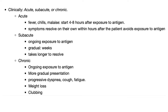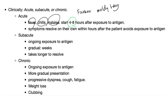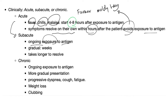Clinically, hypersensitivity pneumonitis is divided into acute, subacute, and chronic. In the acute form, you have fever, chills, and malaise starting four to eight hours after exposure to the antigen. For example, the question will mention a farmer who was dealing with moldy hay and four hours later developed dyspnea, cough, fever, and malaise. Symptoms are self-limiting and resolve within hours after the patient avoids exposure. But as long as the farmer remains in contact with the moldy hay, symptoms will persist. Subacute involves ongoing exposure with a more gradual presentation over weeks. It takes longer to resolve.